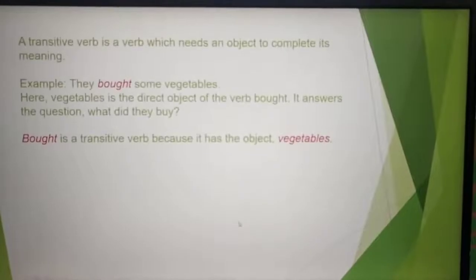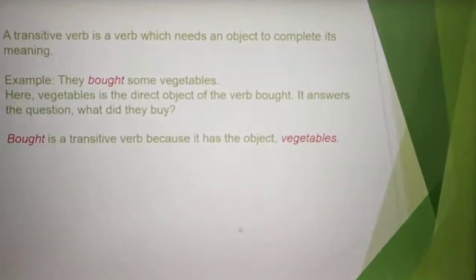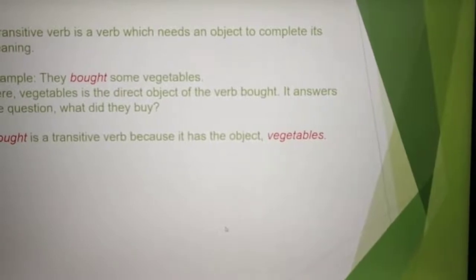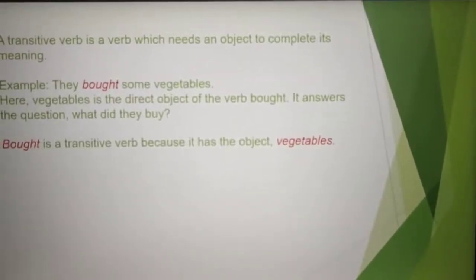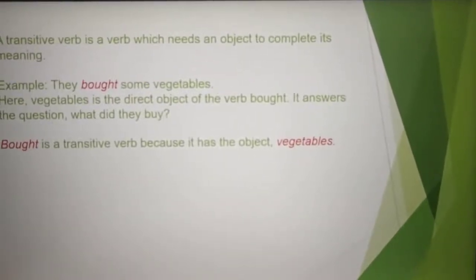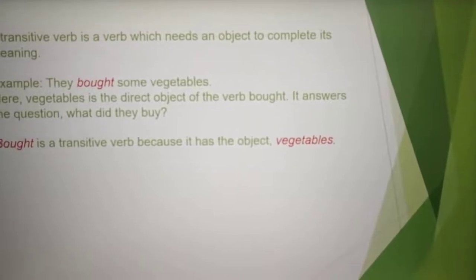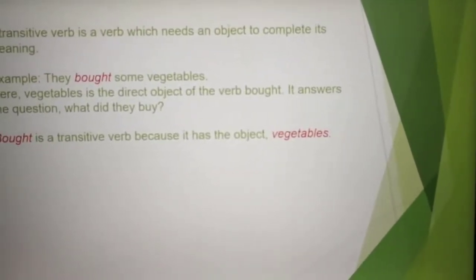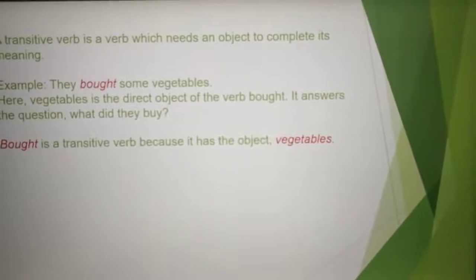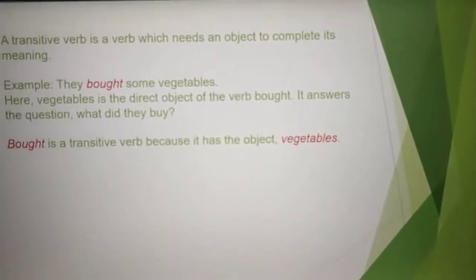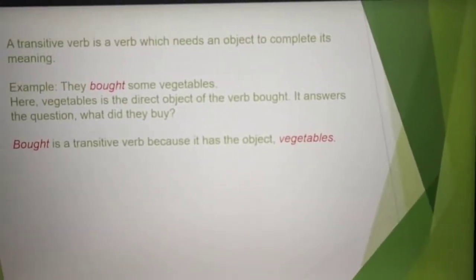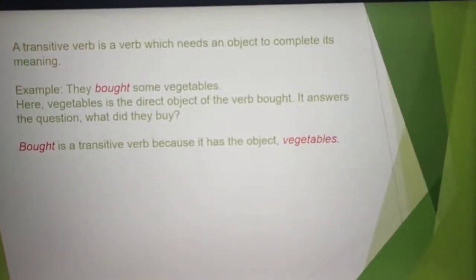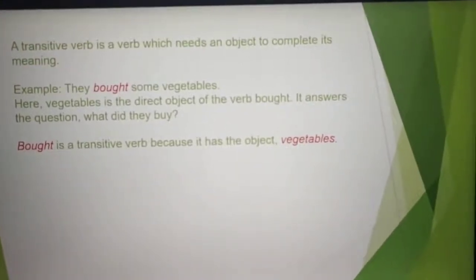What is a transitive verb? A transitive verb is a verb which needs an object to complete its meaning. For example, 'they bought some vegetables.' Here, 'vegetables' is the direct object of the verb 'bought.' It answers the question: what did they buy? So 'bought' is a transitive verb because it has the object 'vegetables.'